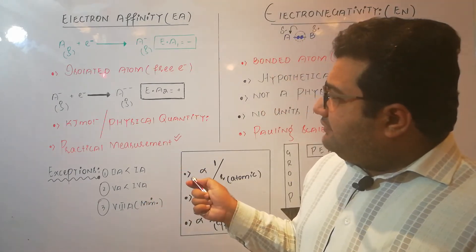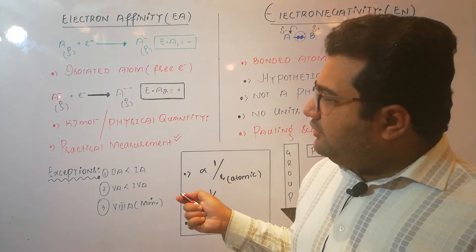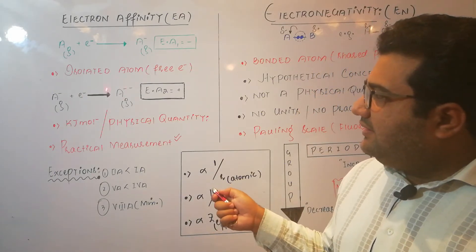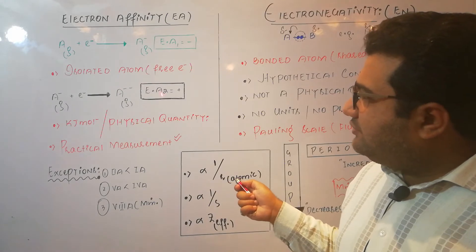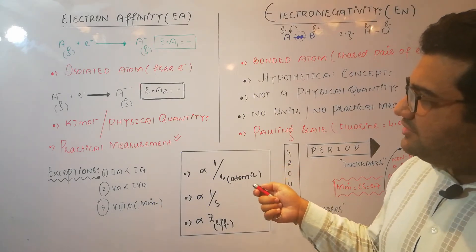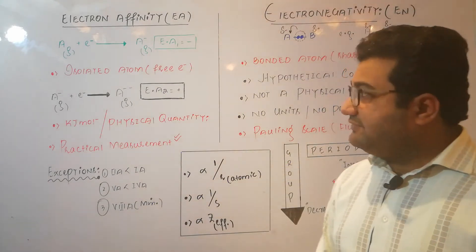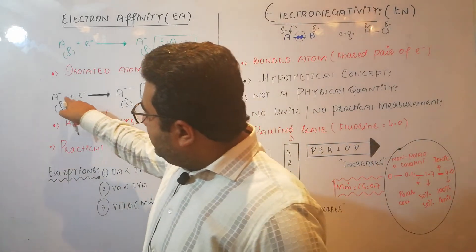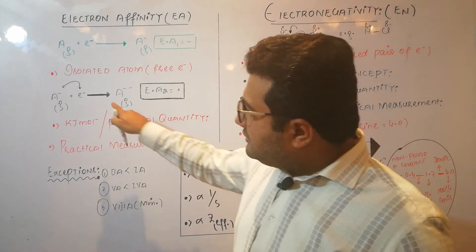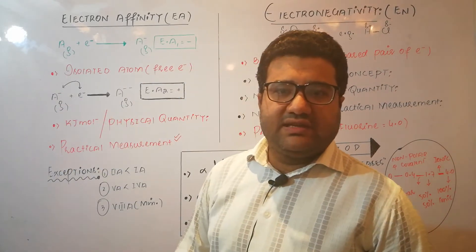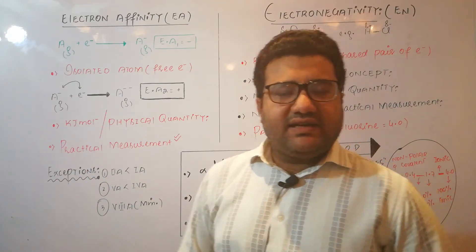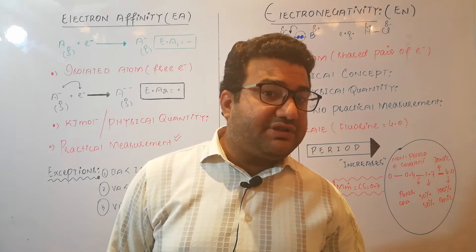A special case arises when a uninegative gaseous ion has already formed and you want to add another electron to form a dinegative gaseous ion. The second electron affinity is positive, meaning the formation of a dinegative ion is endothermic. This is because the incoming electron and the already-negative ion both carry negative charges, so there is a repulsive force between them. Energy must be provided to overcome this repulsion, which is why the second electron affinity and all higher electron affinities carry positive values.